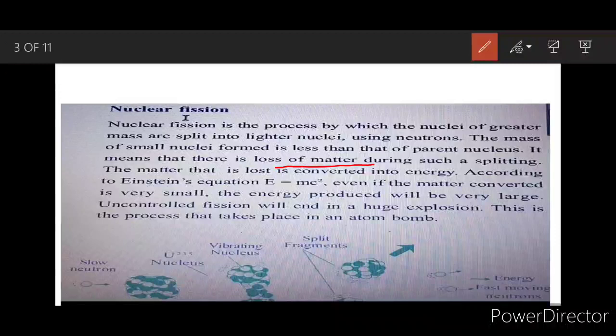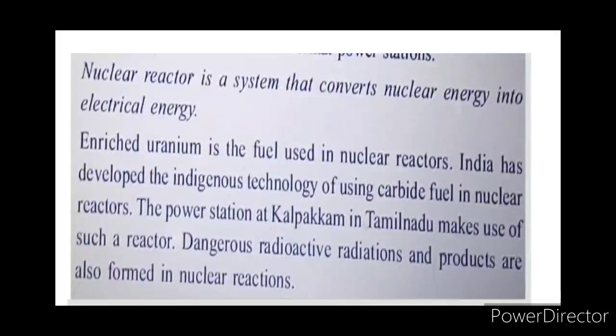Uncontrolled fission will end in a huge explosion. This is the process that takes place in an atom bomb. Nuclear reactor is a system that converts nuclear energy into electrical energy. Enriched uranium is the fuel used in nuclear reactors. India has developed the indigenous technology of using carbide fuel in nuclear reactors. The power station at Kalpakam in Tamil Nadu makes use of such a reactor.